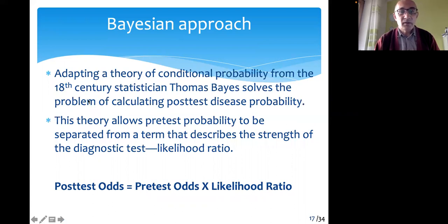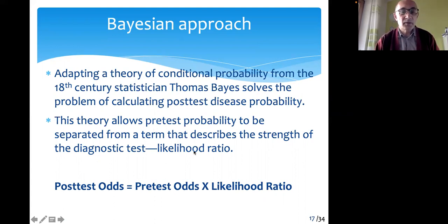So this 18th century statistician Thomas Bayes made this formulation: post-test odds equals pretest odds multiplied by the likelihood ratio. Therefore, we need to calculate the likelihood ratio of a test.